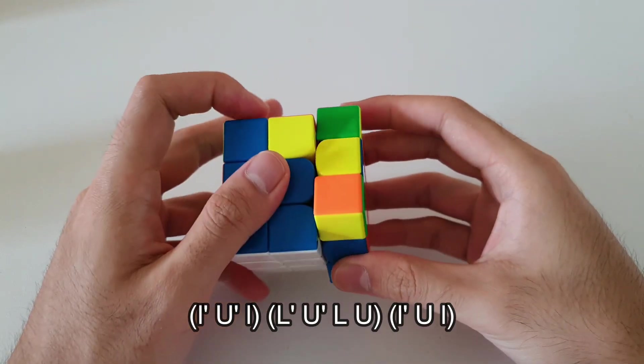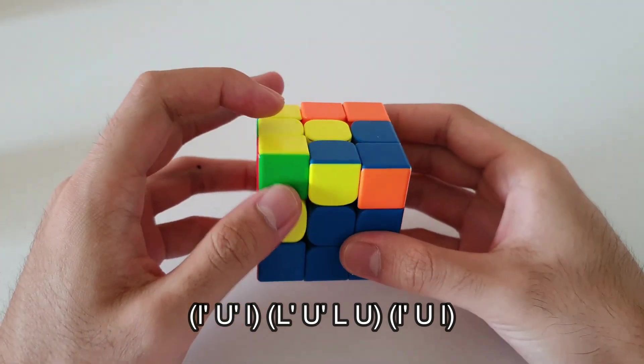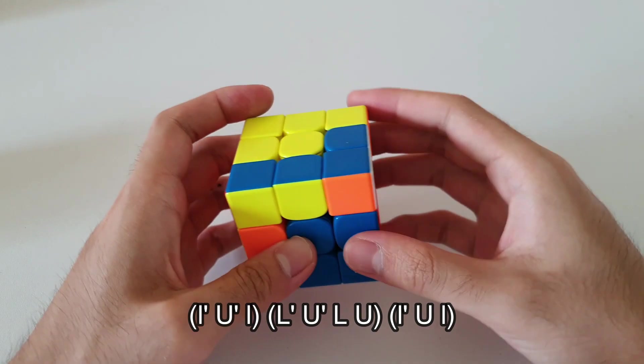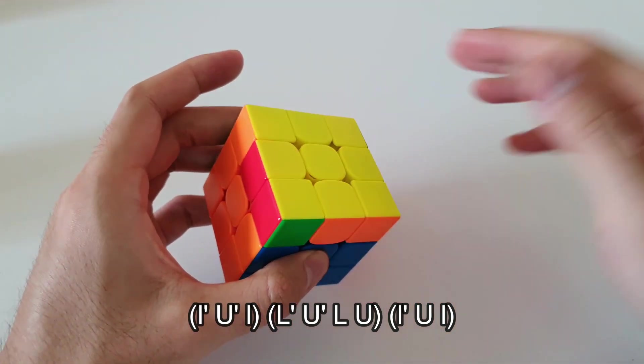It starts off with a wide L' U' wide L then sexy on the left side here, and you finish off by undoing the three setup moves and that solves that OLL case.